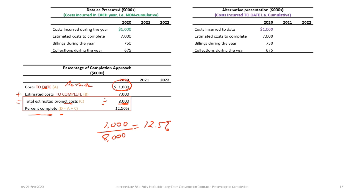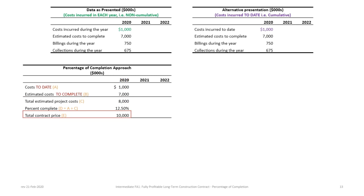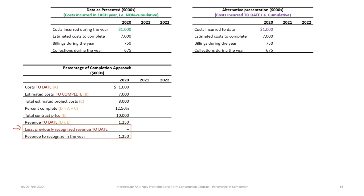We bring in our contract price of $10 million (labeled E). With the percentage complete and contract price, we calculate revenue to date: 12.5% × $10 million = $1,250,000. The next line deducts previously recognized cumulative revenue — not applicable in year one, but important in future years. This gives us revenue to recognize in the year. The revenue-to-date figure is cumulative; the second number is what we recognize in the current year.